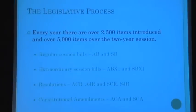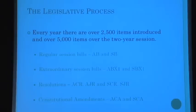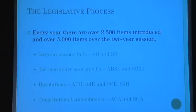Every year, politicians in Sacramento are very busy. There are about 2,500 different measures that are introduced. These can be regular bills — assembly bills or senate bills. There are about twice as many assembly bills as senate bills, because there are twice as many assembly members as senators. You also get into extraordinary sessions, which run parallel to the regular session. These have been common the last couple years. Anytime the state declares a fiscal emergency, we go into an extraordinary session, and all kinds of bills are introduced there.